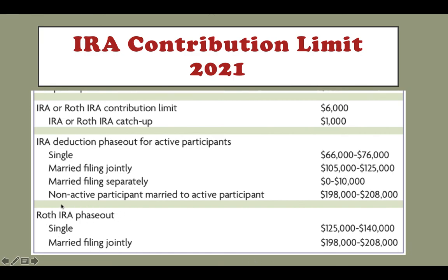If your modified AGI is greater than $208,000, you are not eligible to make a contribution to the Roth IRA. That is why many people — if they make too much money — make a contribution to the traditional IRA and then convert that after-tax money to the Roth IRA. This strategy is called the backdoor Roth contribution.